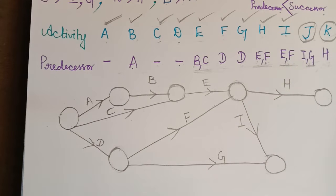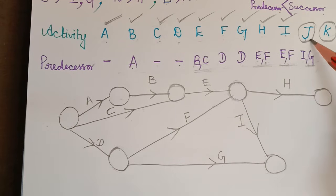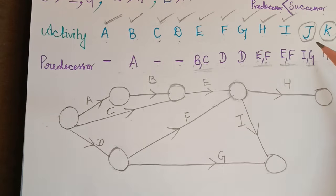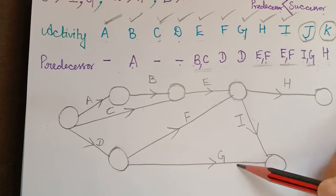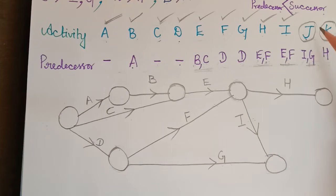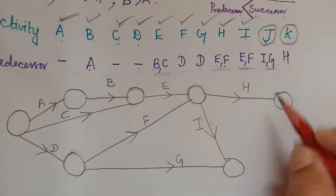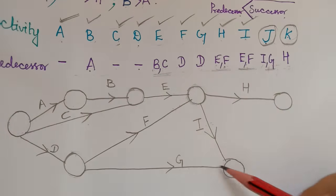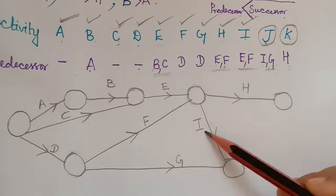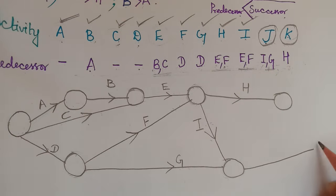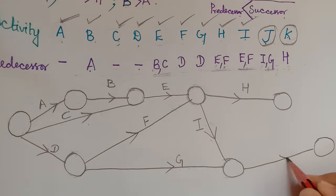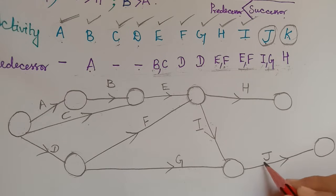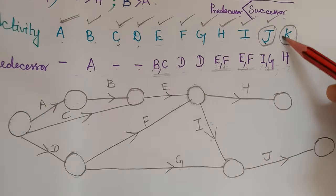Activity I is completed. Now for activity J — its predecessors are I and G. J is an end activity, so it leads to the final end node. The starting point for J is the shared end node of I and G. We draw an end node and connect activity J to it.